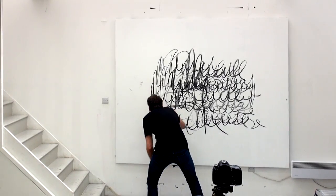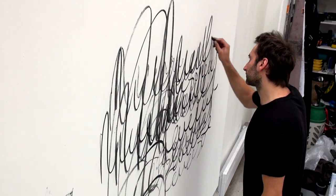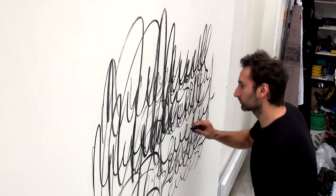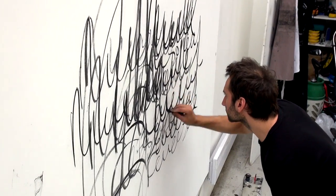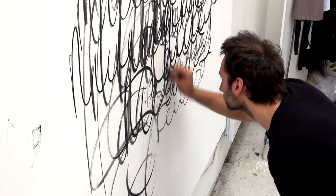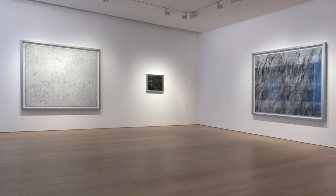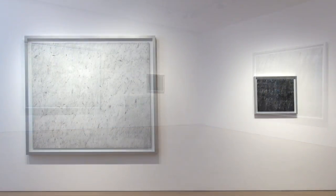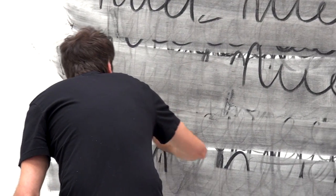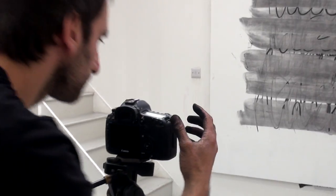I would come into the studio and write a sort of passage of writing onto the actual surface, and I would write again, and write over. For a particular piece called The Grey Bucket, which is in the show, I would write 'grey bucket' and remove it, photograph that, and again, and again, remove it and photograph that.